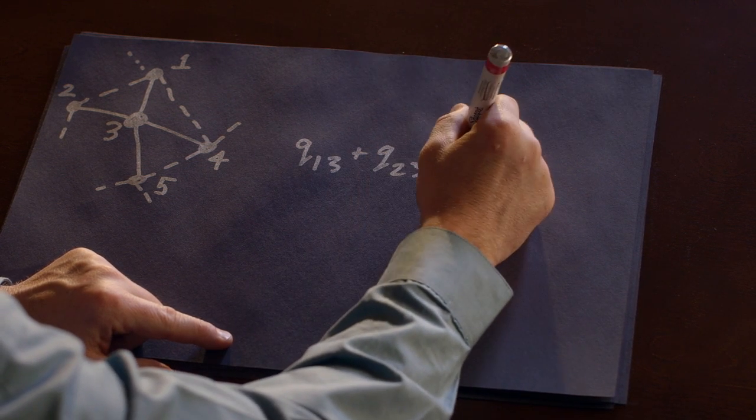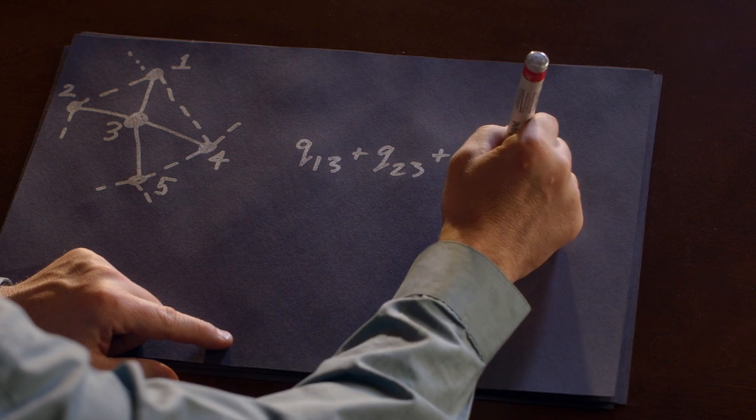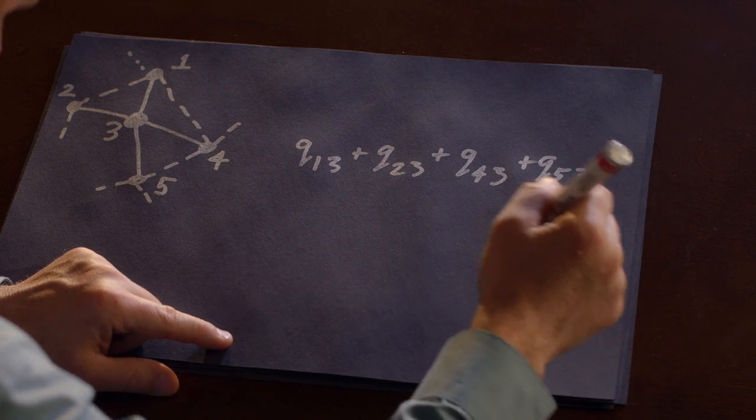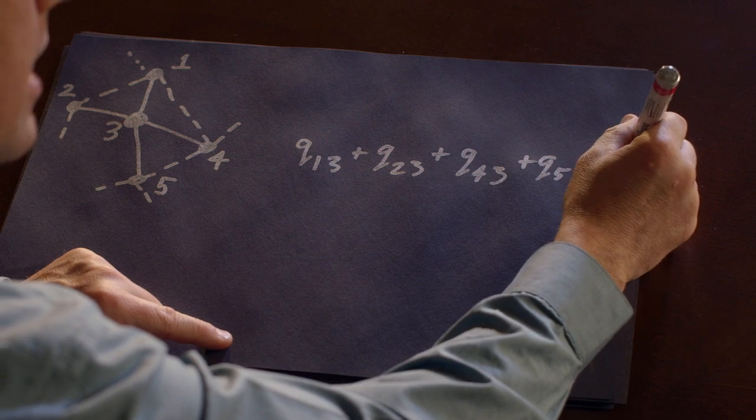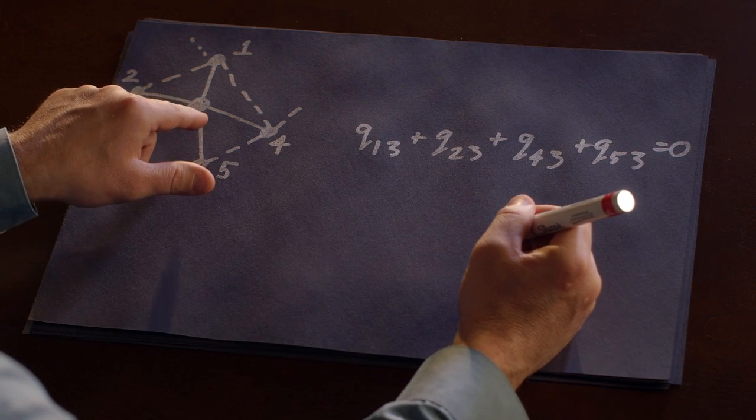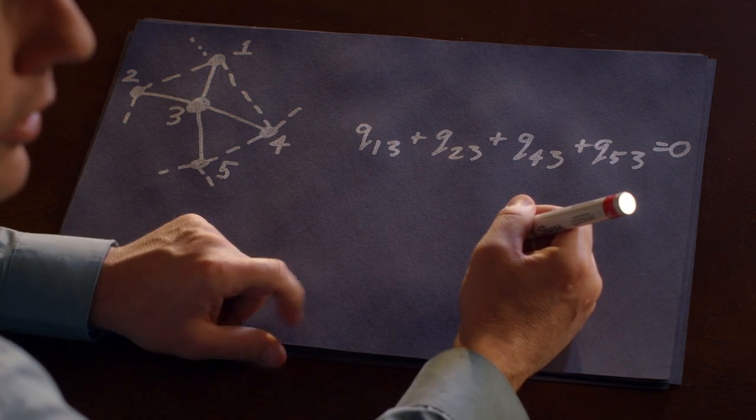plus q five three. And all of that has to add up to zero. That is, if fluid comes in, it has to go out. Remember that q is signed. So if q four three is negative, that means that fluid is leaving three and going to four.